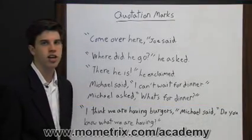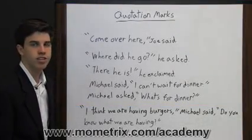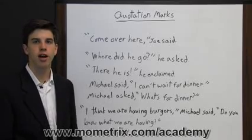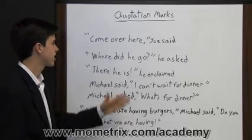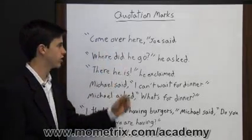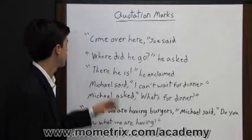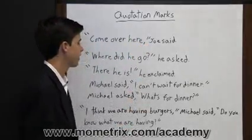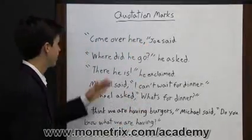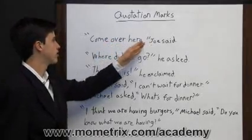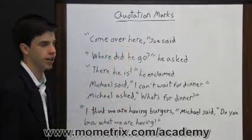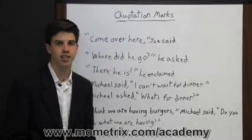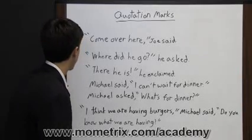Quotation marks are used to show that the words inside the quotation marks are someone else's, not the writer's own. Look at this sentence: 'Come over here,' Joe said. The quotation marks here are conveying that the writer did not say 'come over here' — Joe said it. Notice a few things about a sentence that has a quote in it.